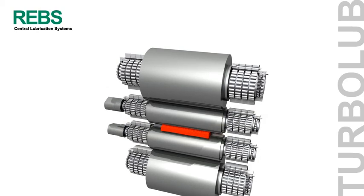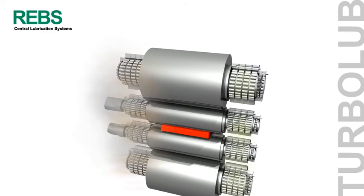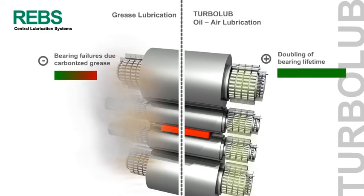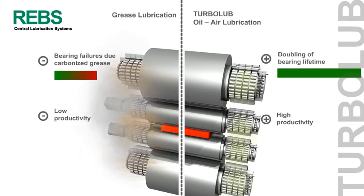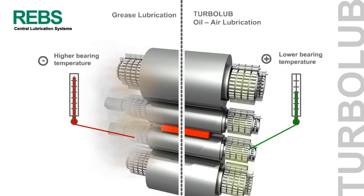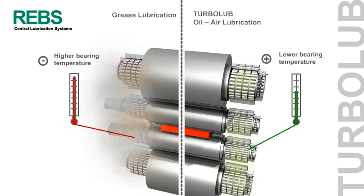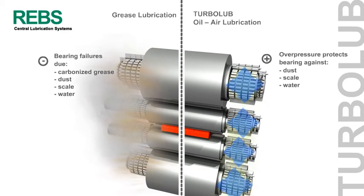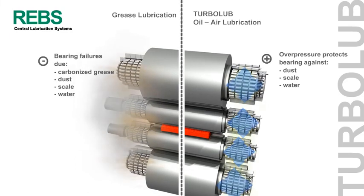Whether you plan to install a new plant or to retrofit an existing unit, the Turbuloop oil-air system offers you numerous advantages compared to standard lubrication systems. The Turbuloop system allows, for example, increasing bearing lifetime by 50%. In contrast to grease lubrication, the bearing temperature is stabilized by the airflow. Permanent overpressure inside the bearing avoids contamination caused by dust, scales and water, which could lead to bearing failures.